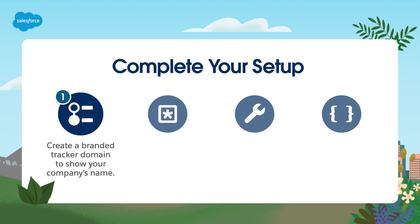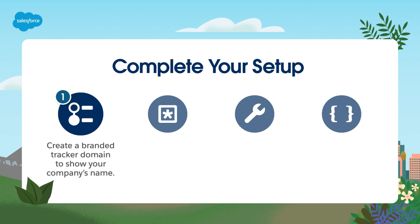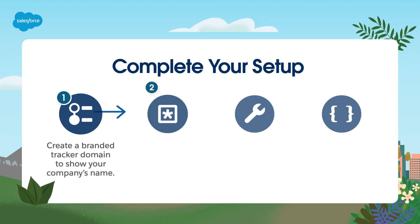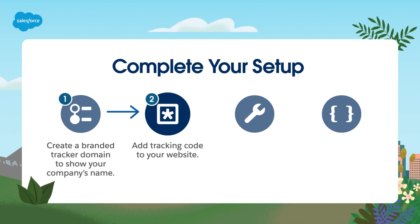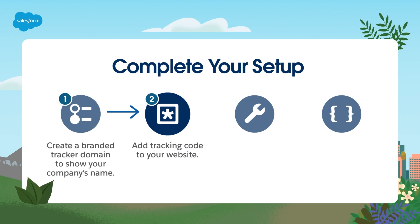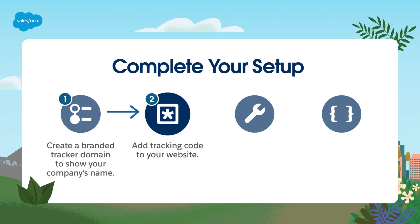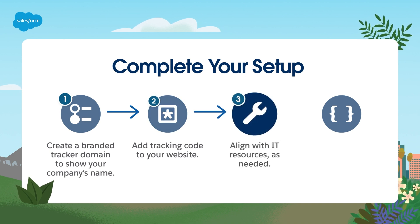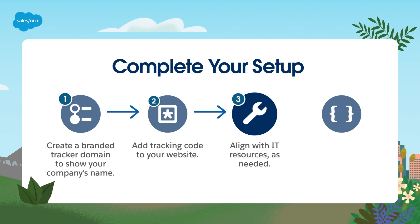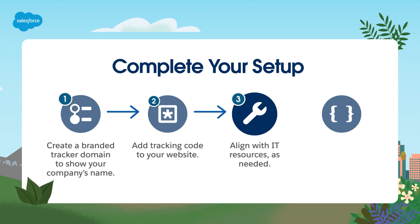The branded tracker domain will also provide a better customer experience and is needed if you're using first-party tracking. Step 2: Add tracking code to your website. To get insights about your prospect's full journey on your website, consider adding tracking code to any other pages a prospect is likely to visit or be redirected to after interacting with your landing page. Step 3: Align with IT resources as needed. You might need assistance from your webmaster or developer to design the landing pages or to add links to pages on your main website.